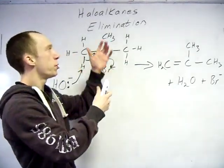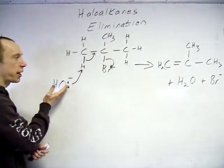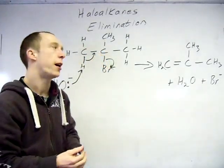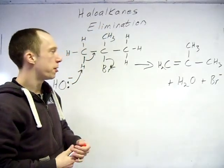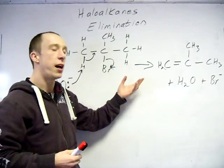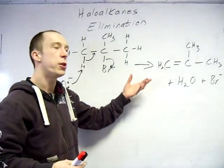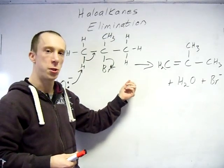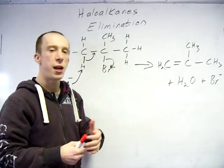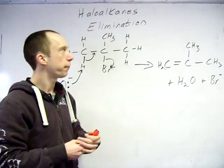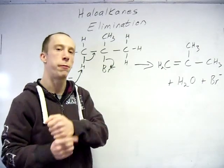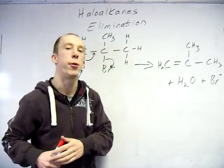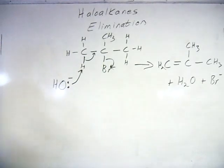The reason why tertiary favours elimination is because the nucleophile cannot get to that carbon - there is too much crowding around it. In terms of conditions: you do the elimination in heat and you use an ethanol solvent. For the previous substitution reaction, it tends to be an ethanol-water mix. I'll stop there and do the free radical substitution in a new video. Thank you.